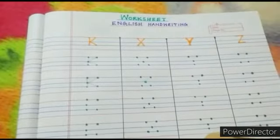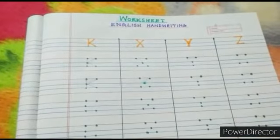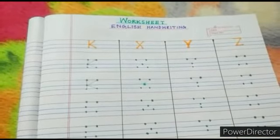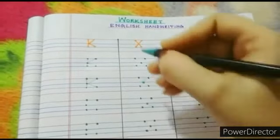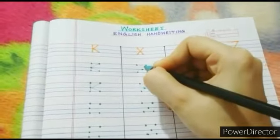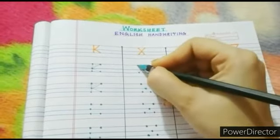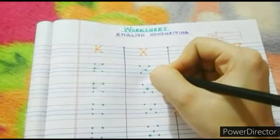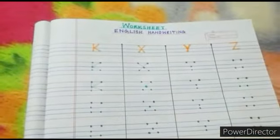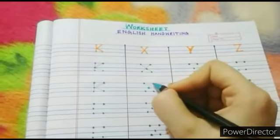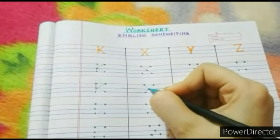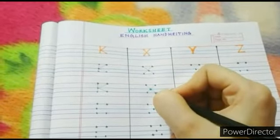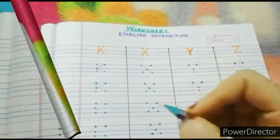Let us proceed to the next letter, that is X. In the case of X, we have to draw a right slanting line and a left slanting line that move across each other. Right slanting line, left slanting line. Let us try this one more time: right slanting line, left slanting line. Good, exactly like this.